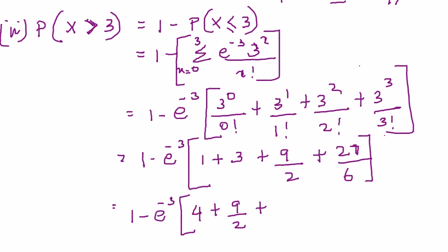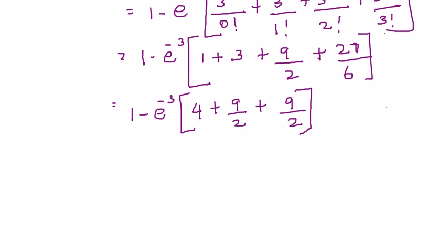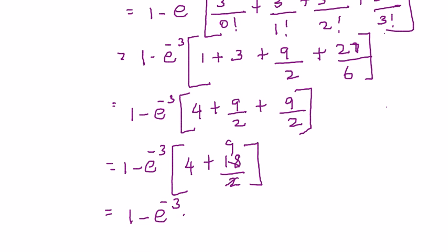And this we can write it as 1 minus e power minus 3 into 4 plus 9 by 2 plus 27 by 6 is nothing but 9 by 2 again, right. And again, this can be written as 1 minus e power minus 3 into 4 plus 18. 9 plus 9 is 18 by 2. 18 by 2 is just plain 9. And therefore, you have 1 minus e power minus 3 into 9 plus 4 is 13.